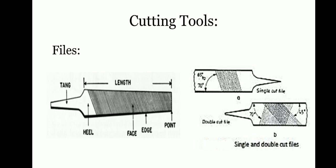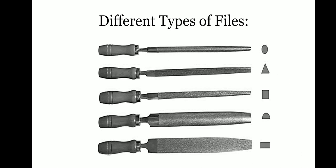Files come in a wide variety of sizes, shapes, cuts, and tooth configurations. The cross section of a file can be flat, round, half round, triangular, square, and any other specialized shape. Let's have a look at the different types of files that we use in a fitting shop.